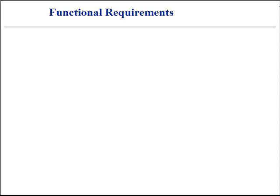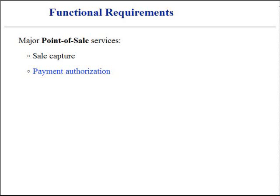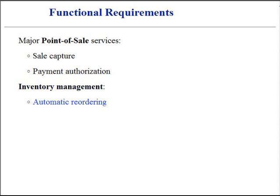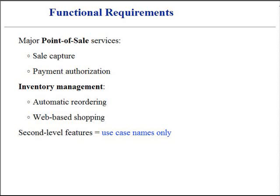In order to perform or realize the use cases, the team of programmers designs collaborating objects and subsystems. Our documentation often begins with a set of major features related to the product or business under development. The major point-of-sale system features may include services such as: sale capture in store, payment authorization, inventory management, automatic reordering, and possibly web-based shopping. Sometimes second-level features are essentially equivalent to the use case names, because the name often includes everything the use case needs to proceed successfully.